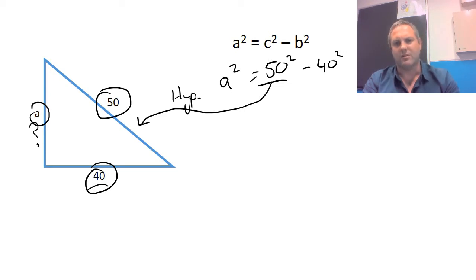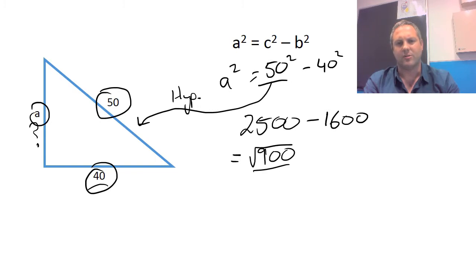So if we continue, we know that 50 squared is 2,500. 40 squared we know as 1,600. When you take this away, we end up with 900. Now, obviously, we can't have 900, so we need to find the square root of 900. And it equals 30. So we know that this measurement goes right here, and that is solved.